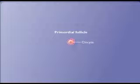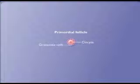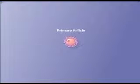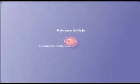A primordial follicle consists of an oocyte surrounded by a single layer of squamous granulosa cells. A primordial follicle becomes a primary follicle as the granulosa cells become enlarged and cuboidal.